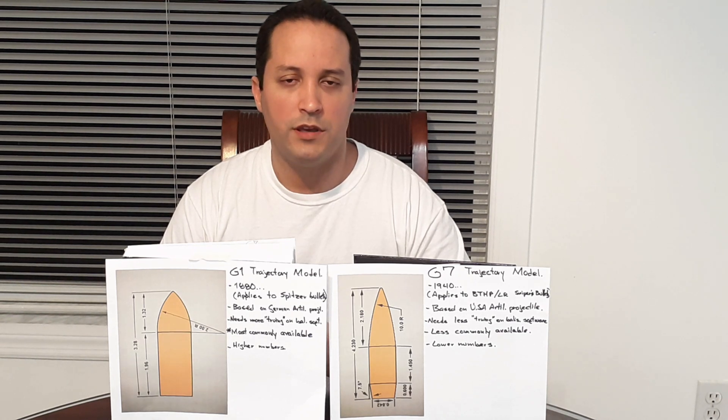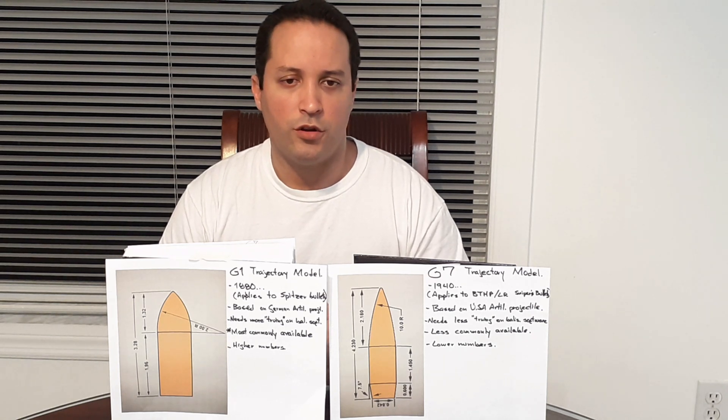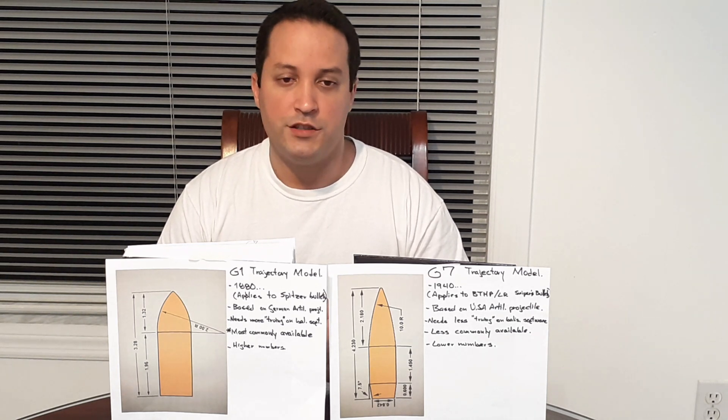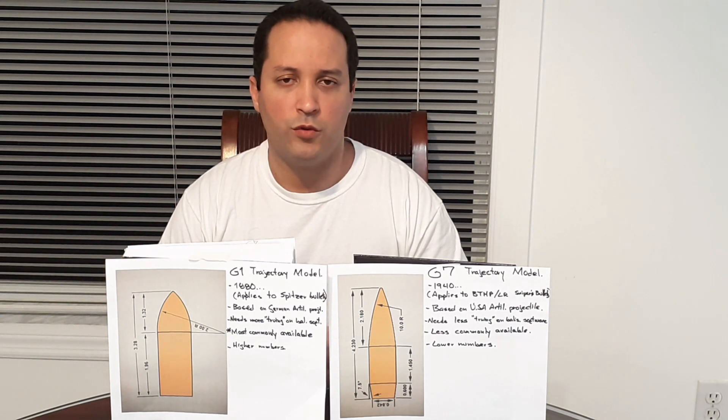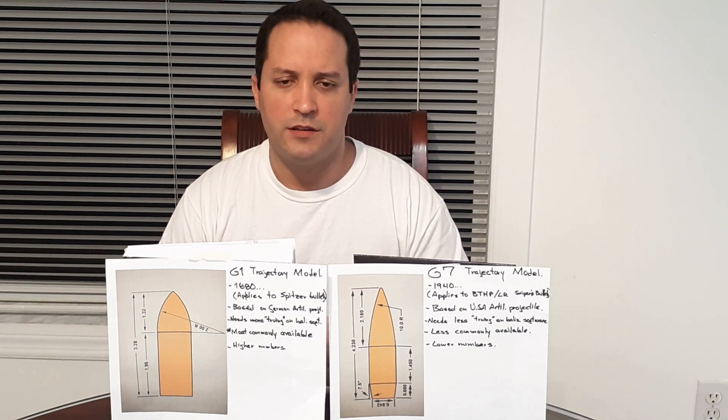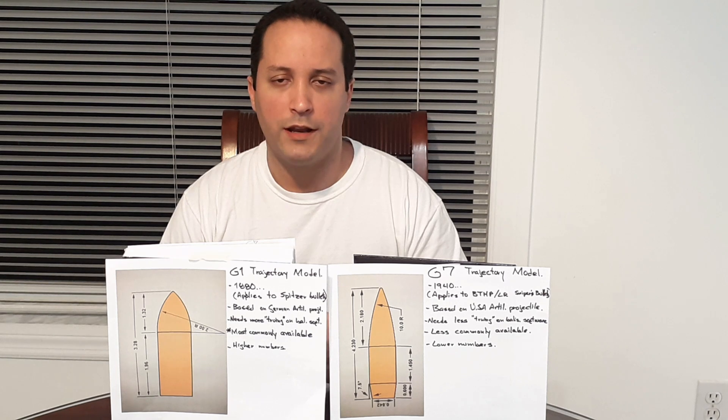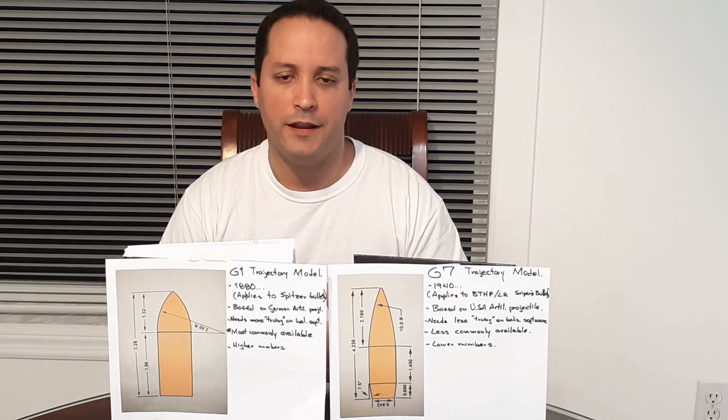Either one is what you're going to input in your ballistic software before you get your final ballistic table for long range engagement. G1, which is this one over here, applies mostly for Spitzer bullets with no boat tail. The G7 applies more and matches modern boat tail hollow point bullets, the long range or sniper quality bullets.